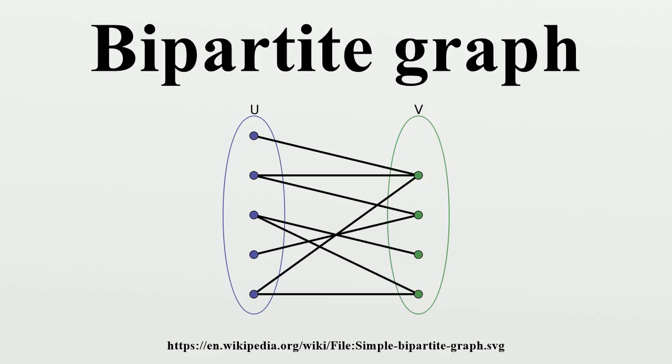When modeling relations between two different classes of objects, bipartite graphs very often arise naturally. For instance, a graph of football players and clubs, with an edge between a player and a club if the player has played for that club, is a natural example of an affiliation network, a type of bipartite graph used in social network analysis.